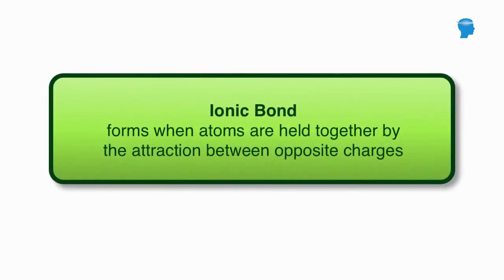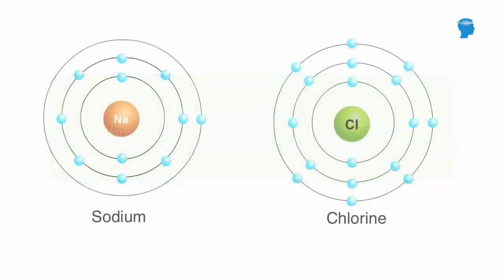An ionic bond forms when two atoms are held together by the attraction between opposite charges. The reaction between sodium and chlorine atoms is an example of how an ionic bond is formed.